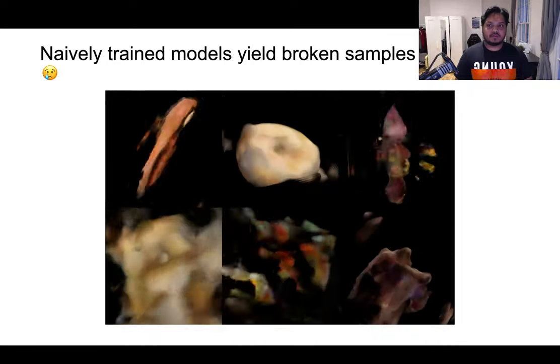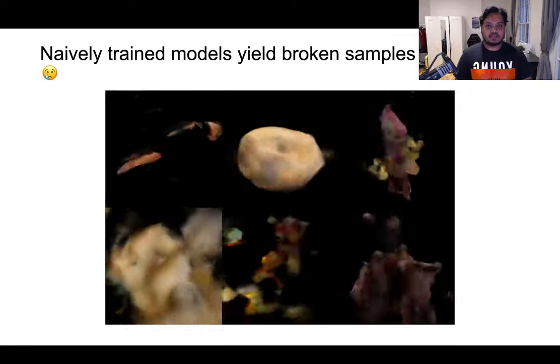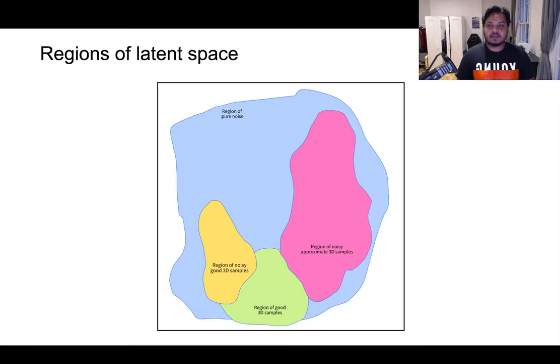However, we find that a model that is trained like this unfortunately yields poor samples. Let's try to investigate why this happens. Here is a didactic illustration of this phenomenon. Without loss of generality, assume that the regions of the underlying latent space of the 3D feature voxel grids look something like this. The green region is where we'd like the diffusion network to implicitly have the highest probability densities.